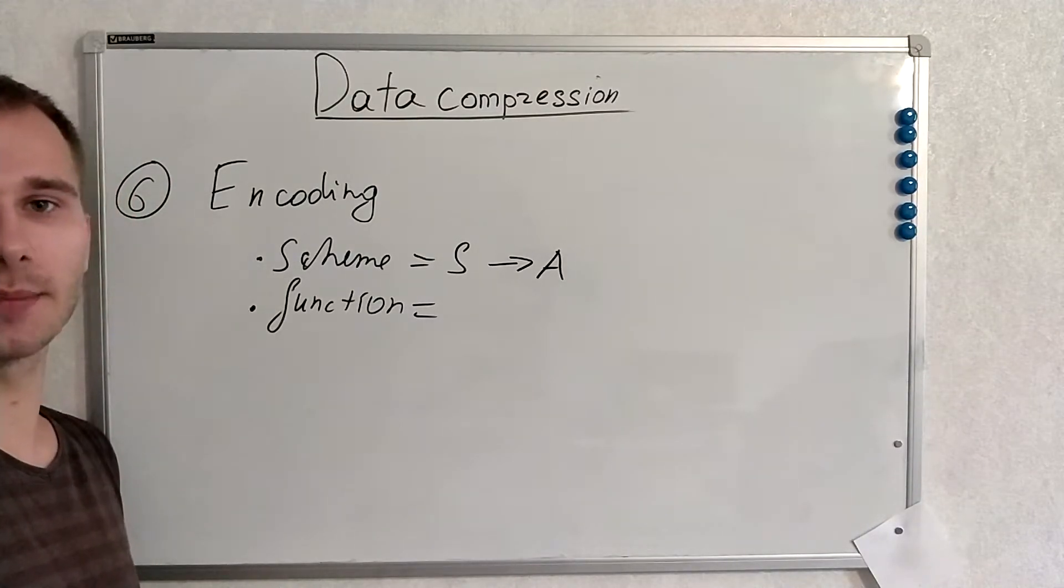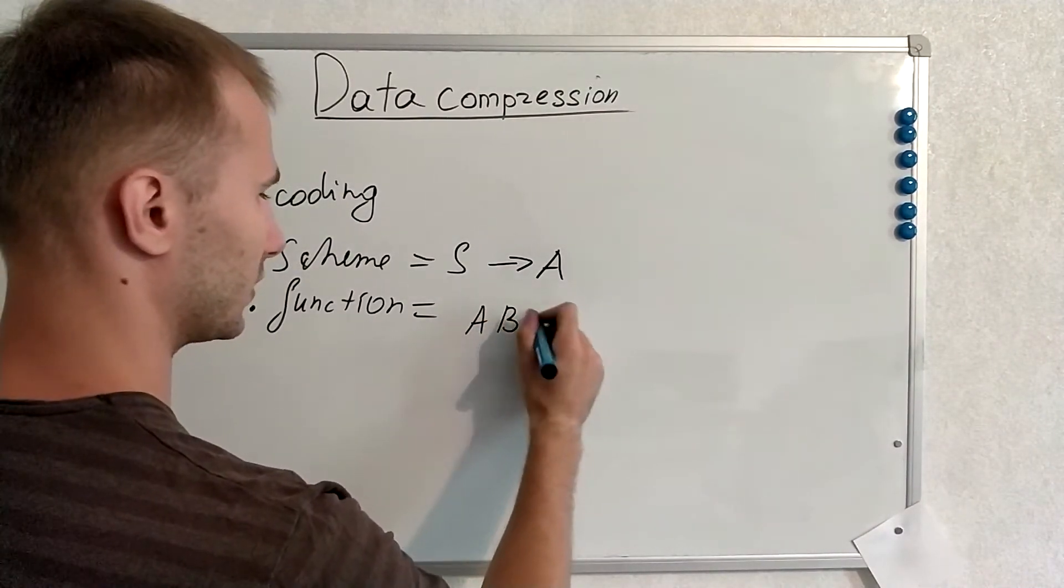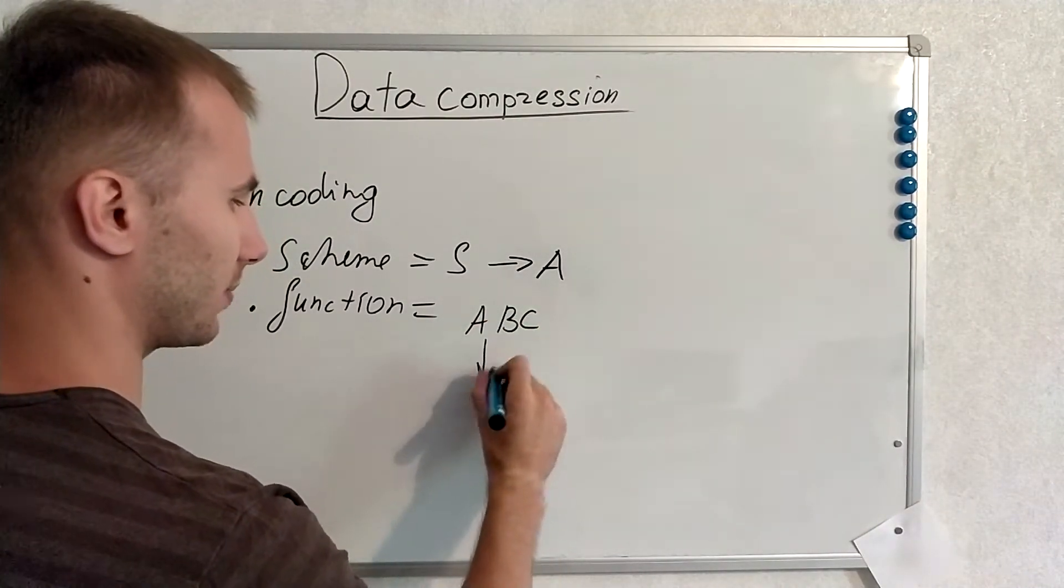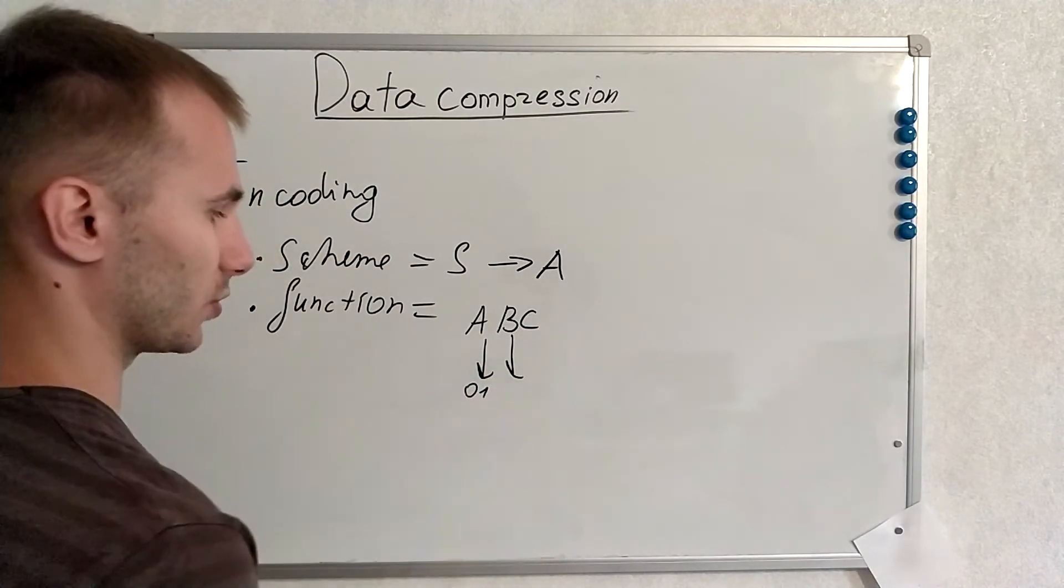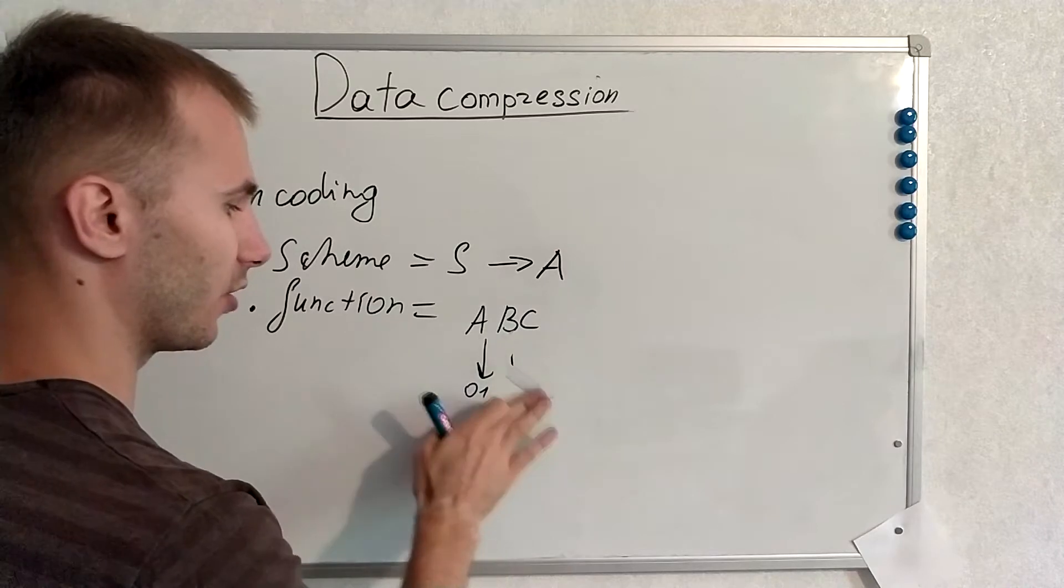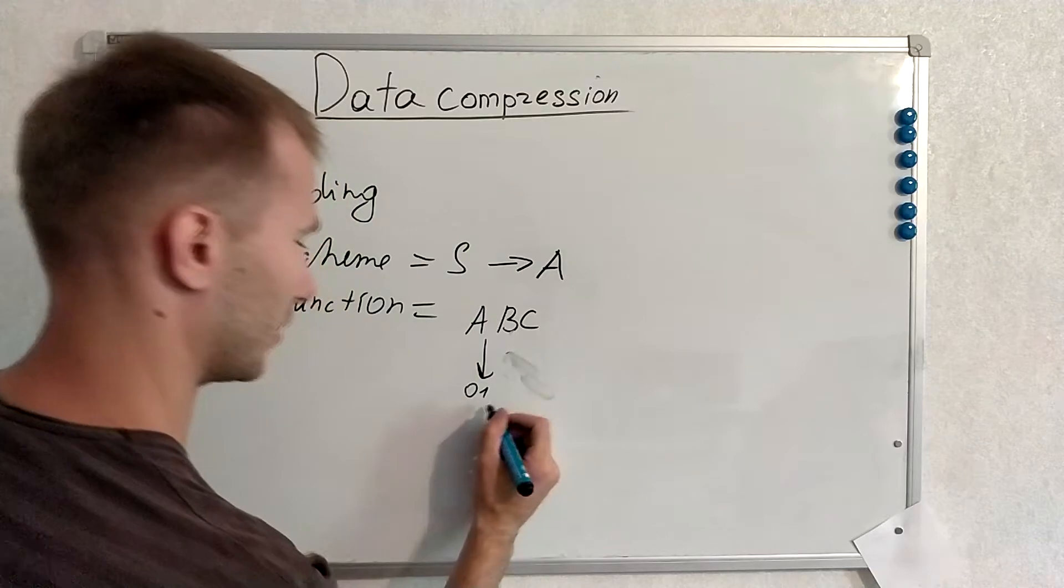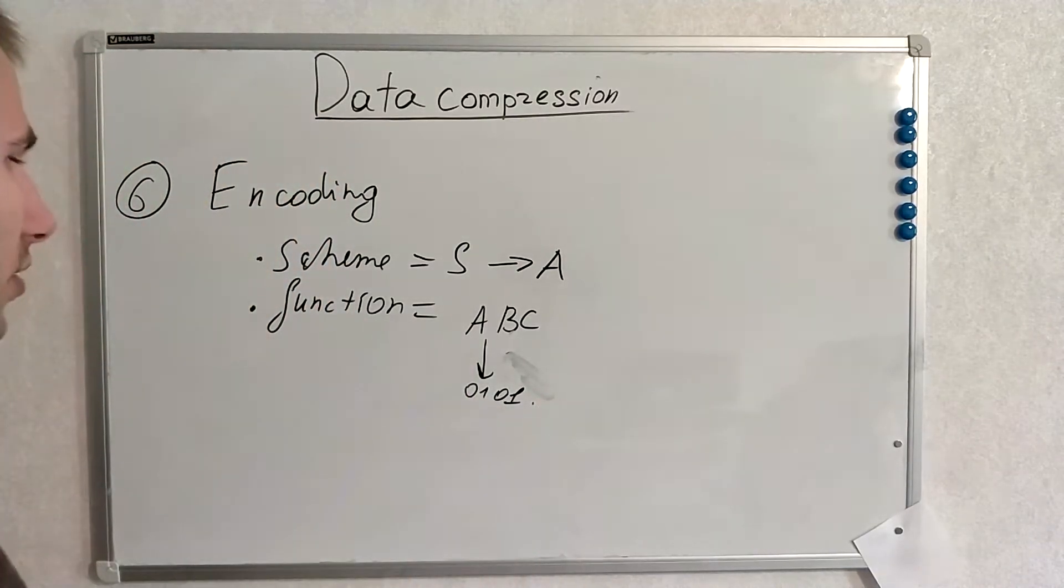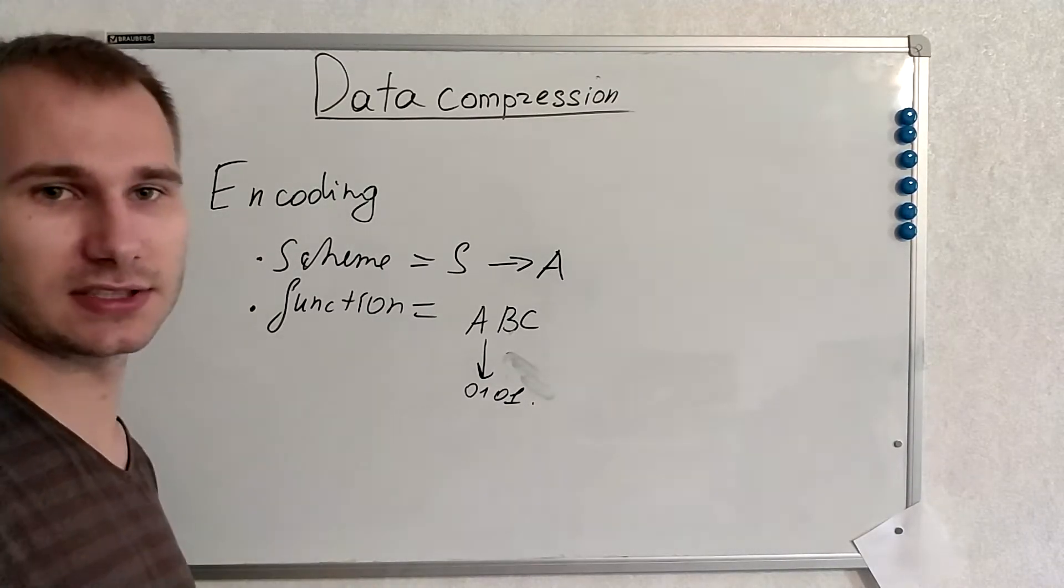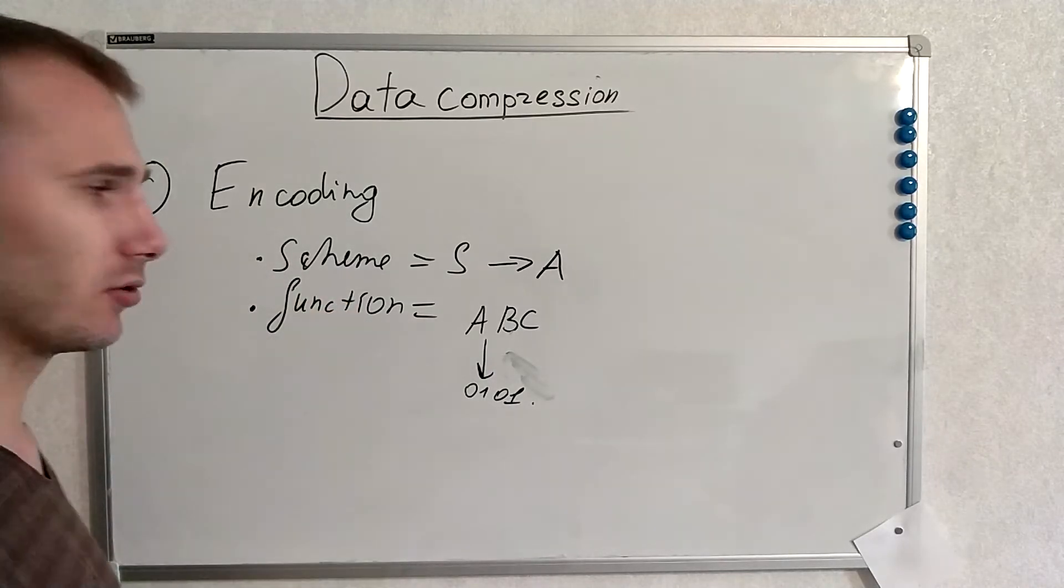We can assign some code to a sequence of symbols. For example, we have A B C. We do not assign it separately A to 0 1, B to 0 1 1 or whatever. We assign the whole sequence of our symbols to some code. Let's say 0 1 0 1. In this case this will be encoding function. Later in our lessons I will give good examples of encoding schemes and encoding functions.